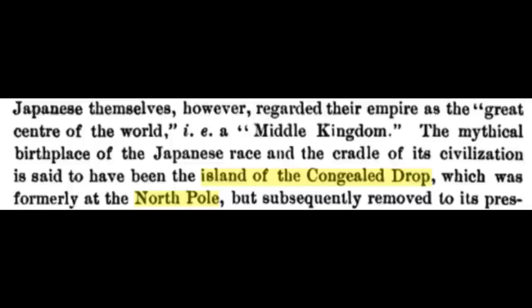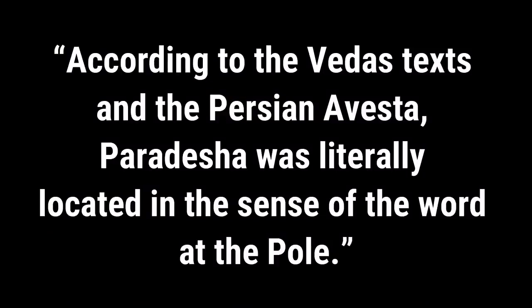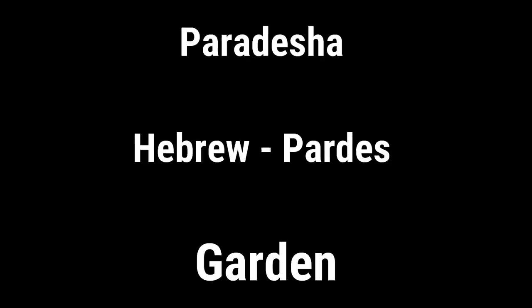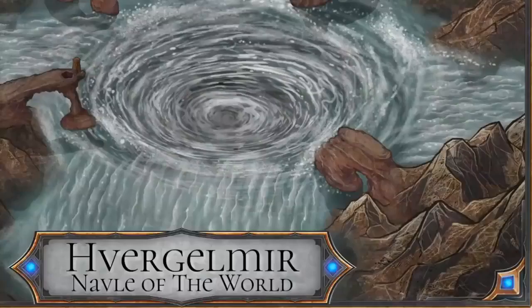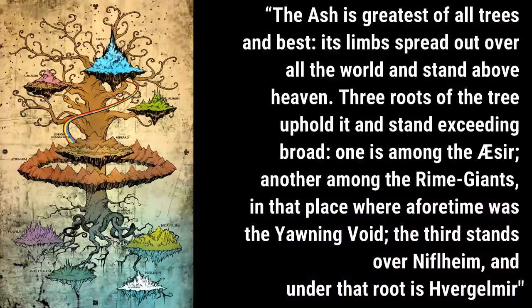The Japanese spoke of the island of the congealed drop, which was placed at the north pole. The Vedics called this land Paradisia. René Guénon in The King of the World writes that according to the Vedic texts and the Persian Avesta, Paradisia was literally located at the pole. The ancient Hebrew word for Paradisia is 'pardes', which translates to garden. In Norse mythology, we have Vergilmir, the whirlpool at the roots of the cosmic tree Yggdrasil, where all rivers flow from.